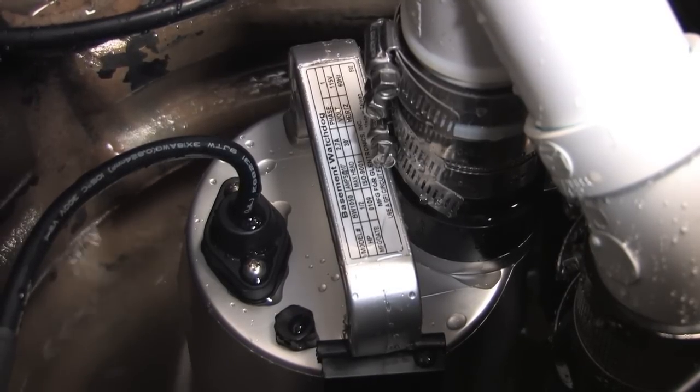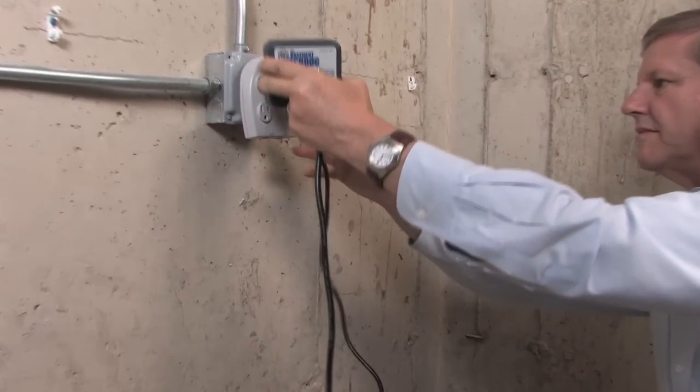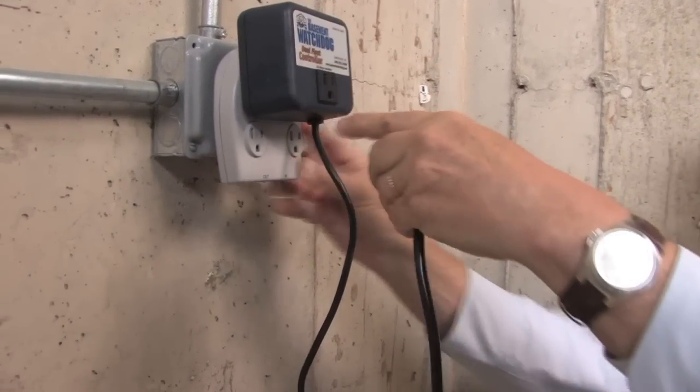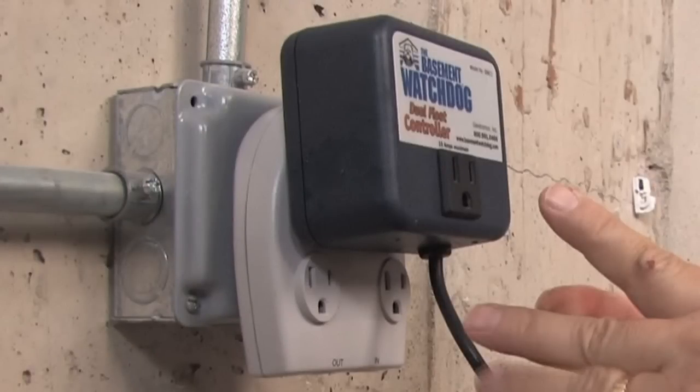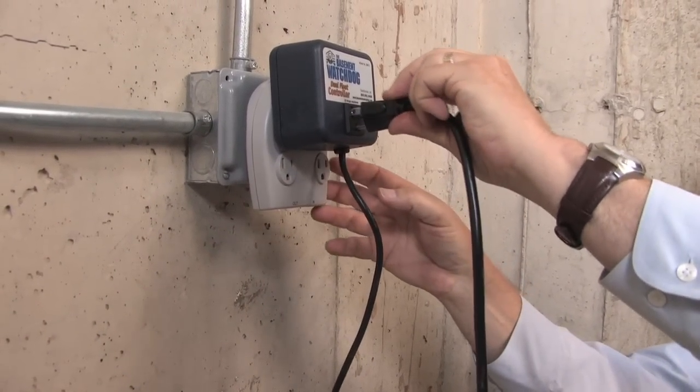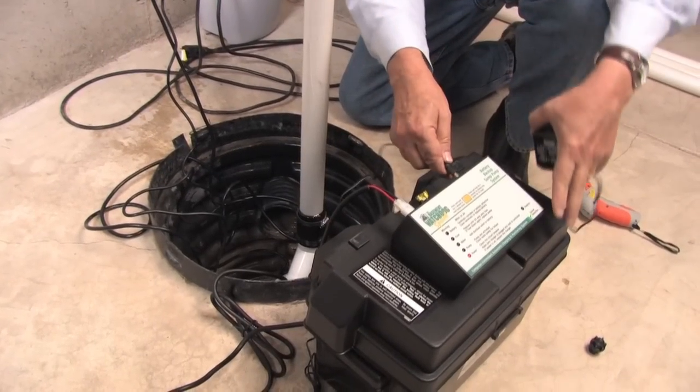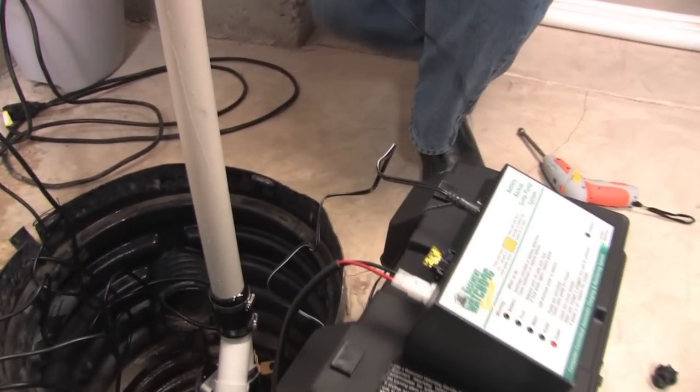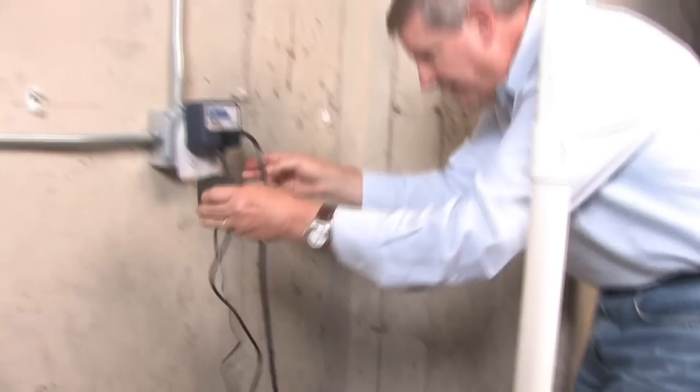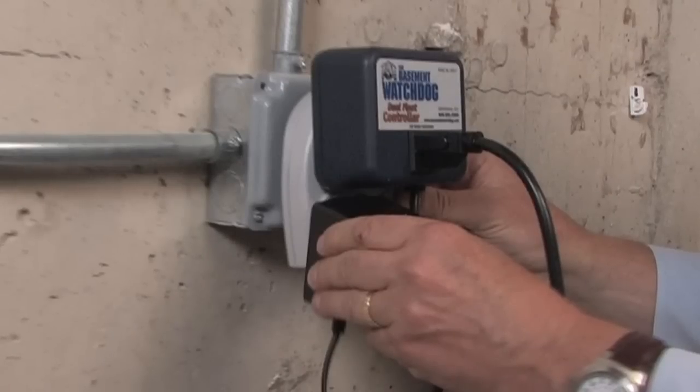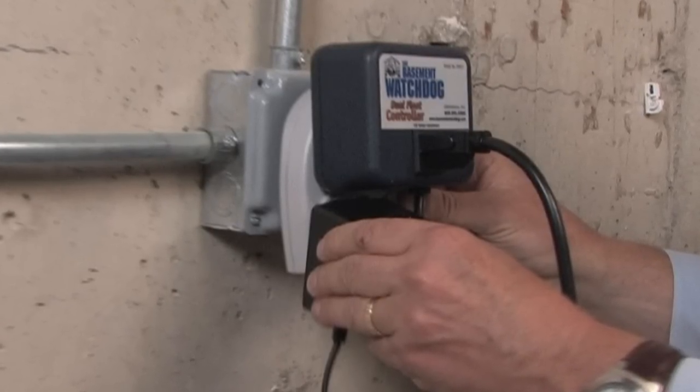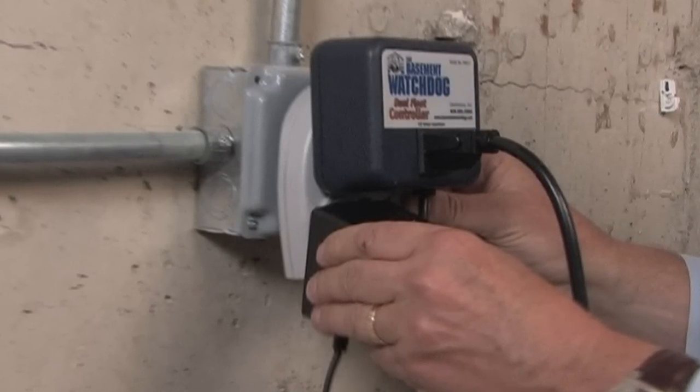Now plug in the primary pump. Plug the piggyback controller into a properly grounded three-prong outlet. Then plug the primary pump into the receptacle on the controller. Connect the charger by inserting the plug into the charger jack on the back of the control unit and then plugging the other end into an AC outlet on the wall. You can provide additional protection for the control unit by using a surge protector.